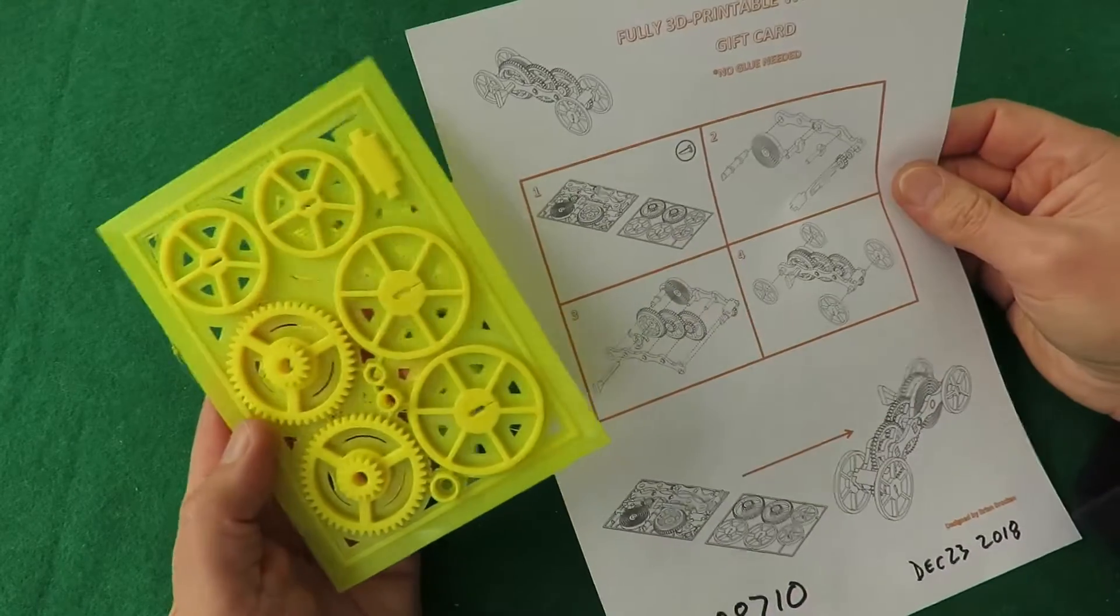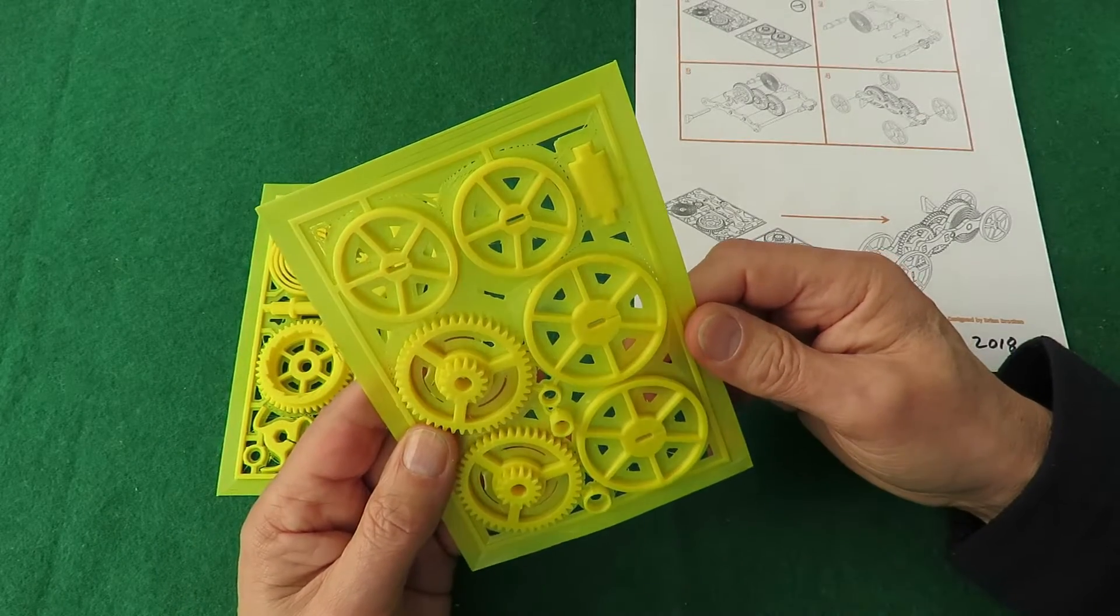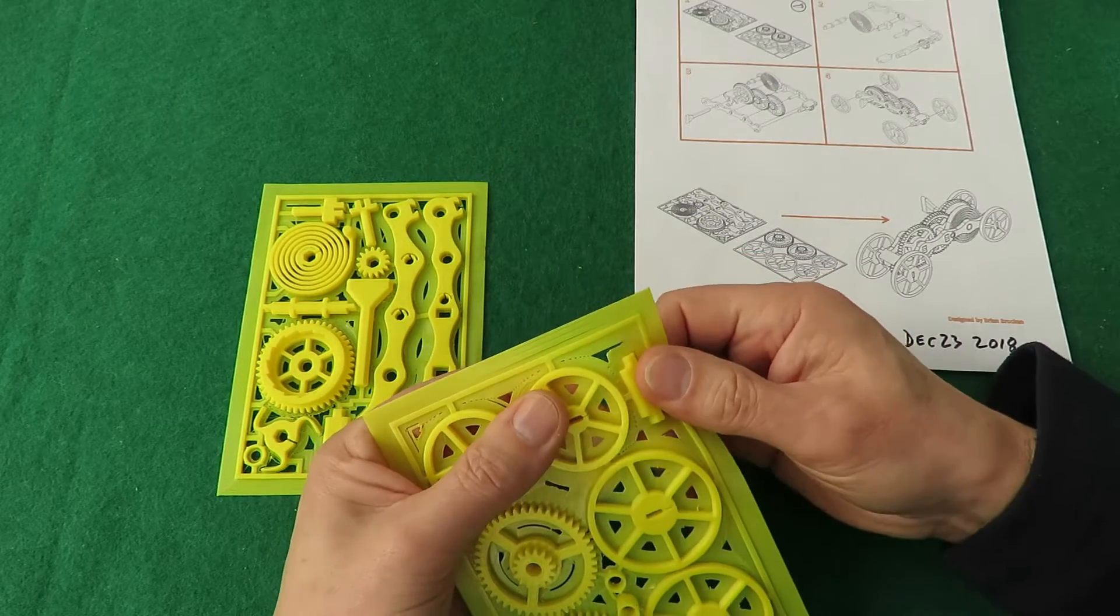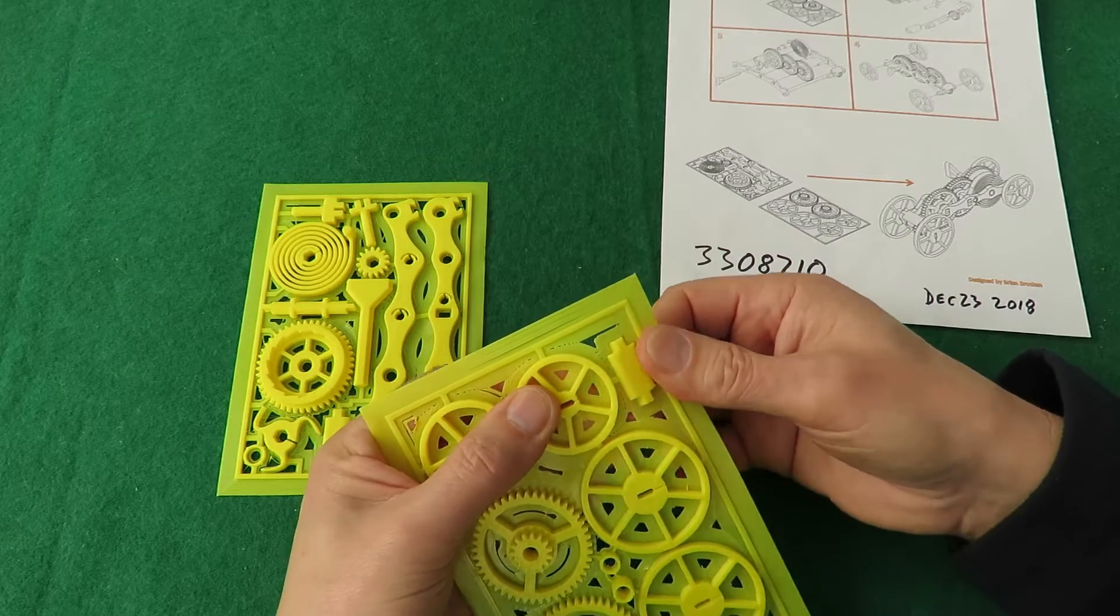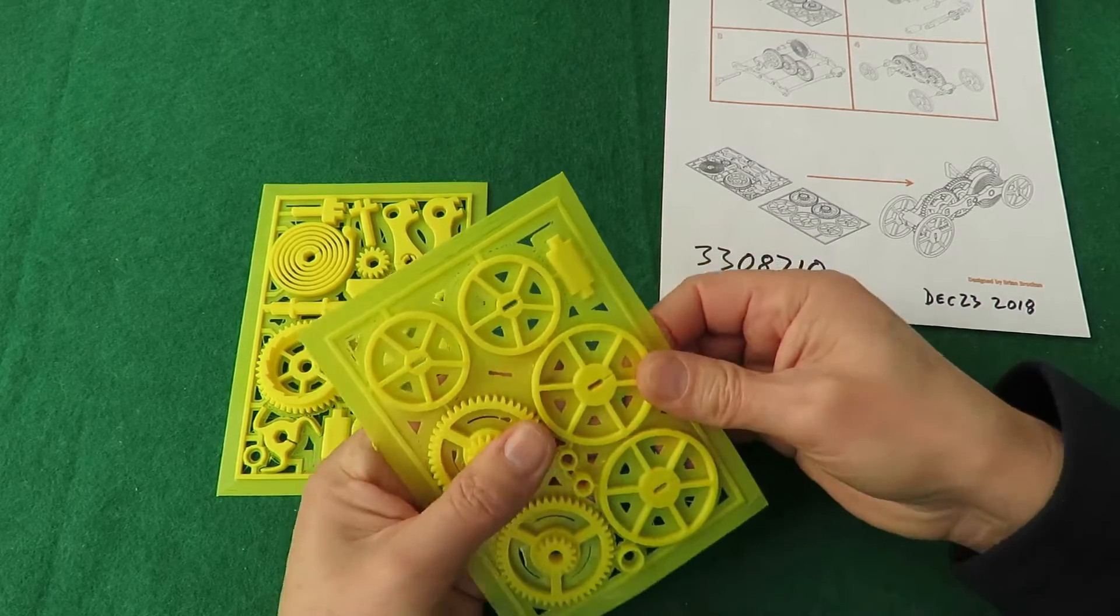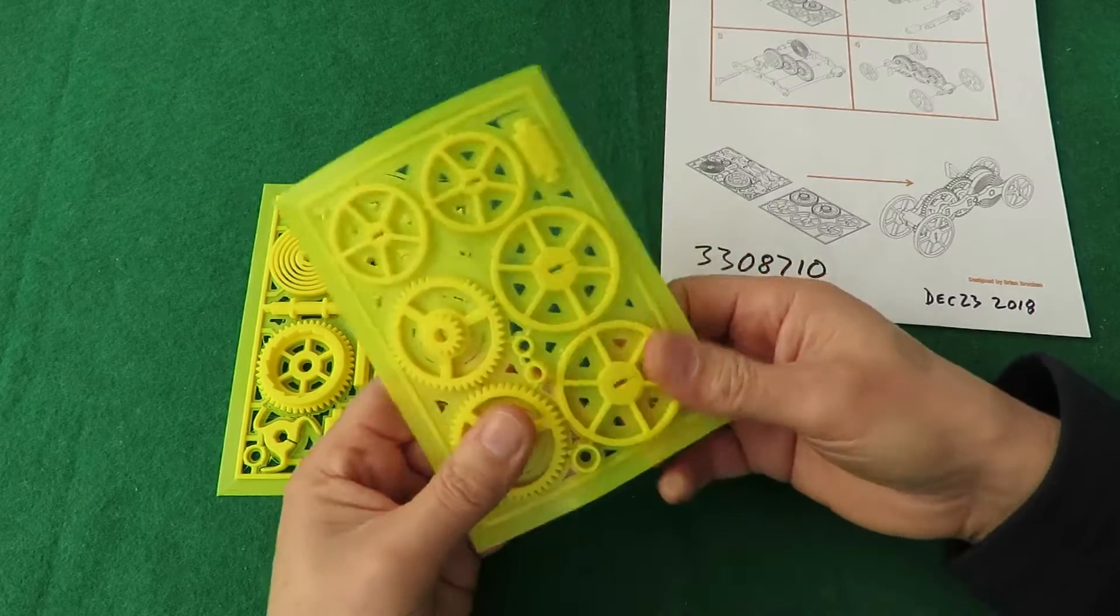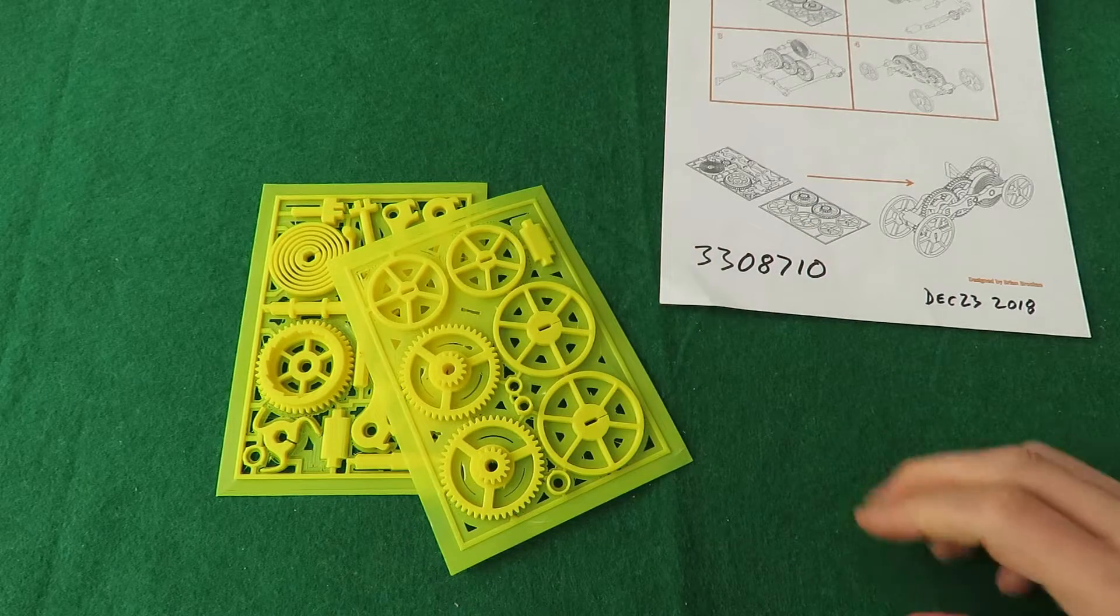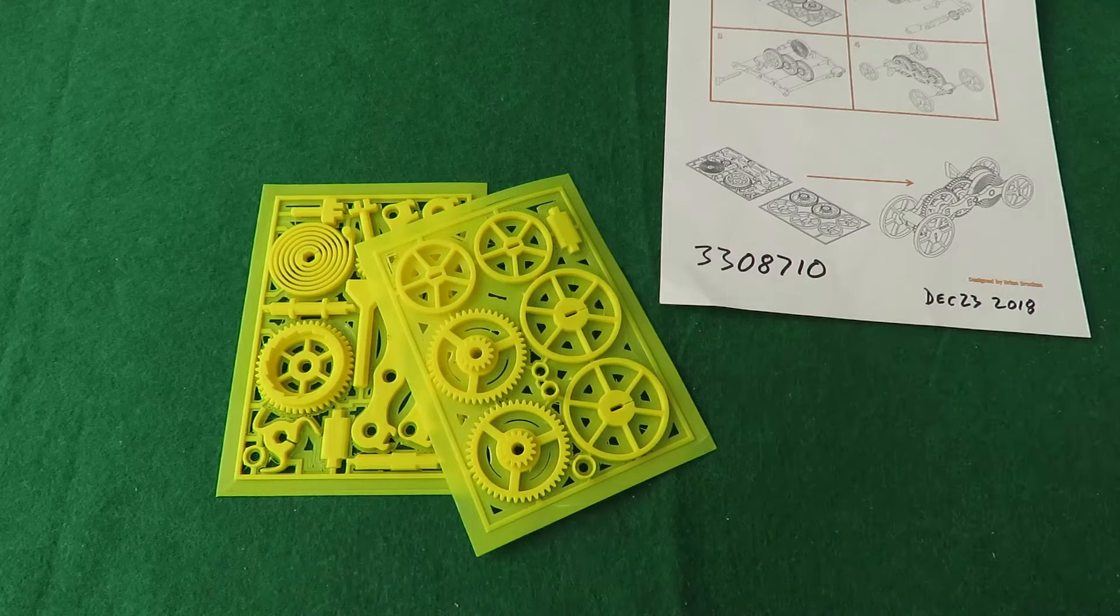So the instructions basically say cut everything out first. If we didn't have the brim around it, it would be a lot easier. Okay, I'll get some cutters and I'll cut it out. You don't really need to see me do that. I'll cut it out, trim it up, and then we'll see if we can assemble it.